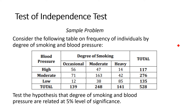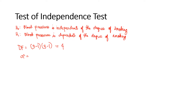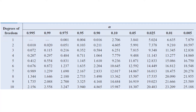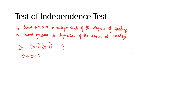Our alpha is equal to 0.05. Now let's determine the tabular chi-square. The degrees of freedom is 4 and alpha is 0.05, so the tabular chi-square is equal to 9.488.